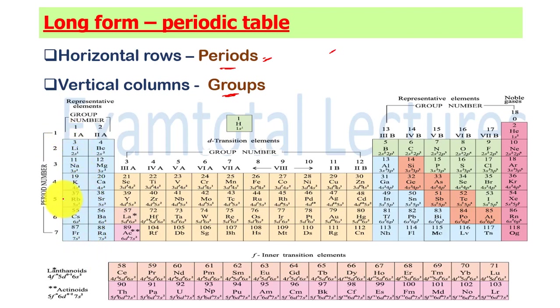These vertical columns are called groups. The vertical column in blue color has the same outer electronic configuration. In a particular group, the outer electronic configuration is the same. Similarly, this group, and if you look at the last group of noble gases, group 18, its outer electronic configuration is the same. This is why they are called groups or families, like noble gas family. According to IUPAC, International Union of Pure and Applied Chemistry, there are 18 groups.